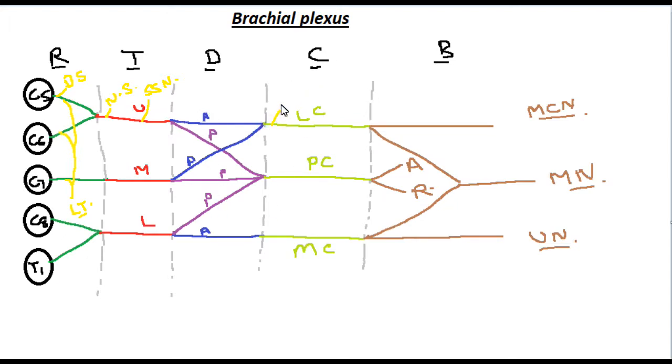From the lateral cord, lateral pectoral nerve. Branches from the medial cord: medial pectoral nerve, medial cutaneous nerve of arm, medial cutaneous nerve of forearm. From the posterior cord, three branches: upper subscapular, lower subscapular and the thoracodorsal nerve.